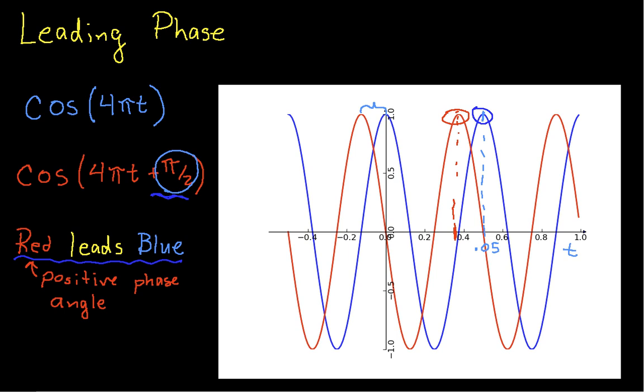So that's an example of leading phase. One last comment: this phase difference, or this phase value of π/2, is expressed in radians. Quite often, we'll express the phase angle in degrees. So a phase angle of π/2 is equivalent to a phase angle of 90 degrees.